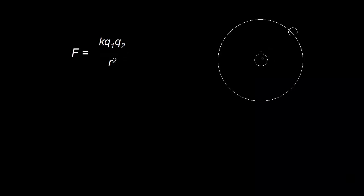In the Bohr model of the hydrogen atom, we have one proton in the nucleus — I draw a positive charge here — and a negatively charged electron orbiting the nucleus, kind of like the planets orbiting the sun. Even though the Bohr model is not reality, it is useful as a concept of the atom. We can calculate the radius of this circle, and we're actually going to do that in this video. I should warn you that this is a lot of physics, so if you don't like physics, you can jump to the next video where I show you the result.